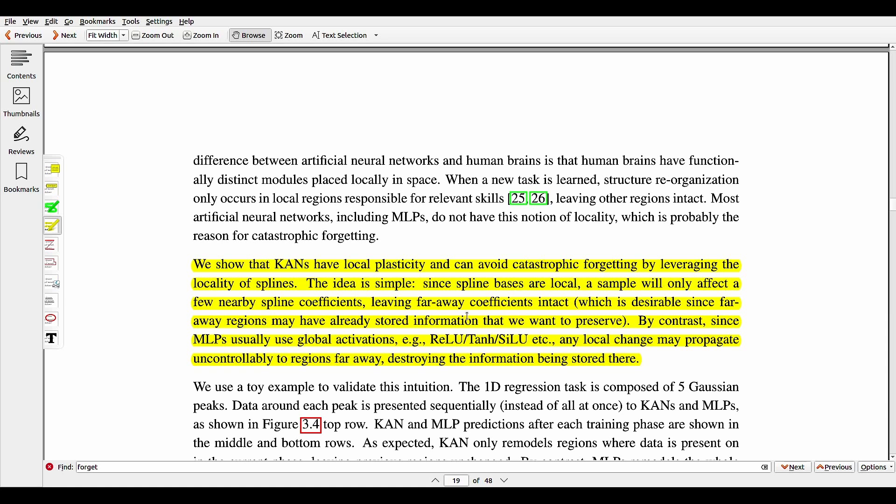A key difference between artificial neural networks and human brains is that human brains have functionally distinct modules placed locally in space. When a new task is learned, a structure reorganization only occurs in local regions responsible for relevant skills, leaving other regions intact. Most artificial neural networks including MLPs do not have this notion of locality, which is probably the reason for catastrophic forgetting.